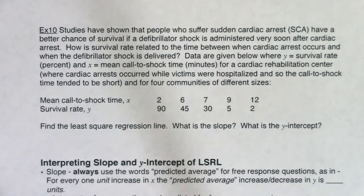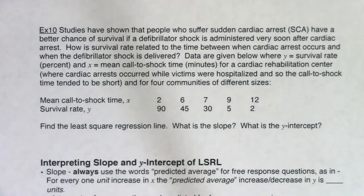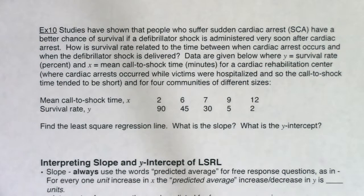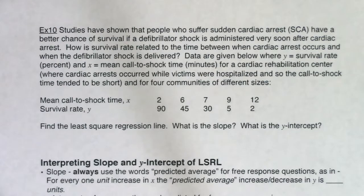Example 10 is a pretty intense example — there's a lot to unpack. Studies have shown that people who suffer sudden cardiac arrest (SCA) have a better chance of survival if a defibrillator shock is administered very soon after cardiac arrest. The question asks how survival rate relates to time between cardiac arrest and the shock, where y equals survival rate in percent and x equals mean call-to-shock time in minutes. We need to find the least squares regression line, the slope, and the y-intercept.